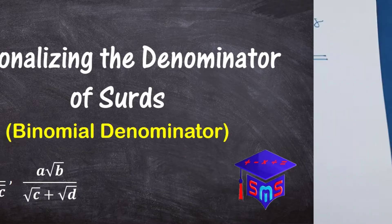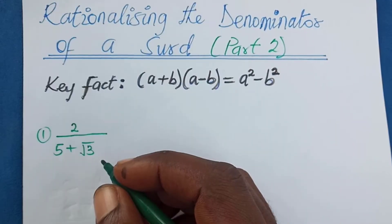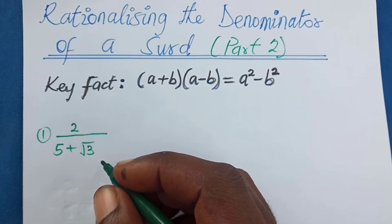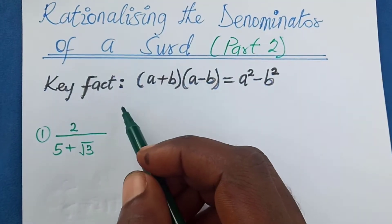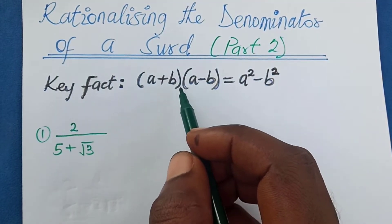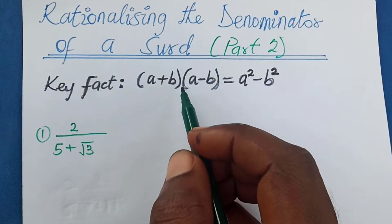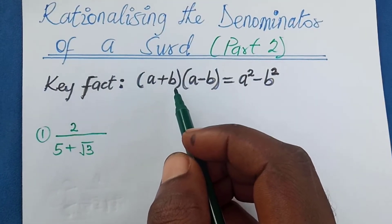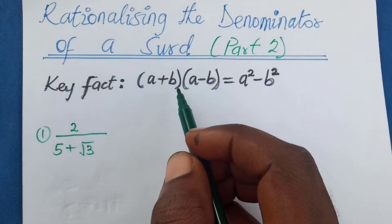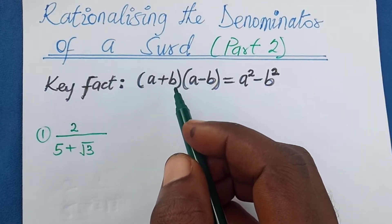Let's look at the second part of how to rationalize the denominator of a surd. You have to recall this identity from the previous session because we are going to make use of that.